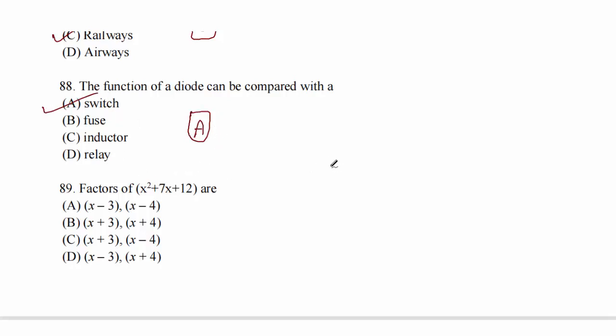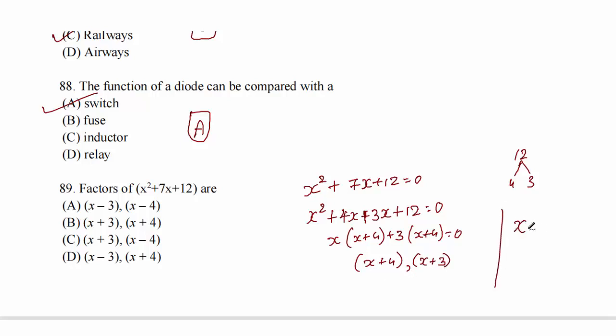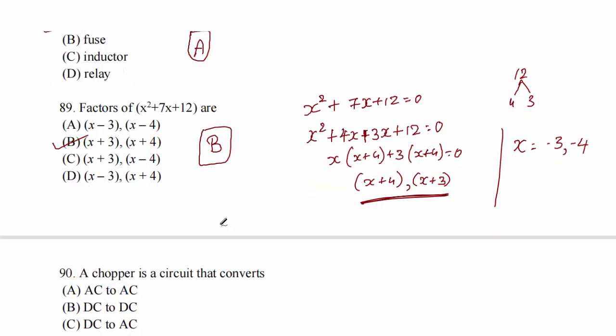Question 89: factorization of x² + 7x + 12 = 0. Factors of 12 are 4 and 3. Since the signs are plus, we write x² + 4x + 3x + 12 = (x + 4)(x + 3) = 0. Therefore, x = -4 or x = -3. Option B.